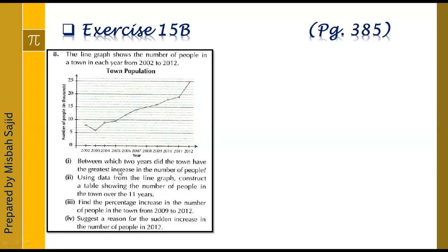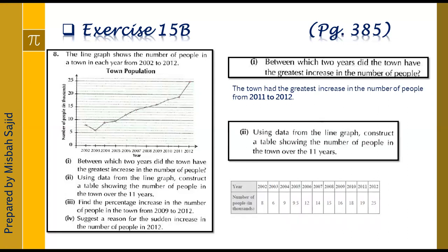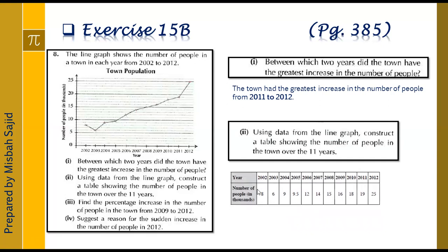The town had the greatest increase in the number of people from 2011 to 2012. After that, using data from the line graph, we construct a table showing the number of people in the town over the 11 years from 2002 to 2012. The number of people in thousands for each year are: 8, 6, 9, 9.5, 12, 14, 15, 16, 18, 19.